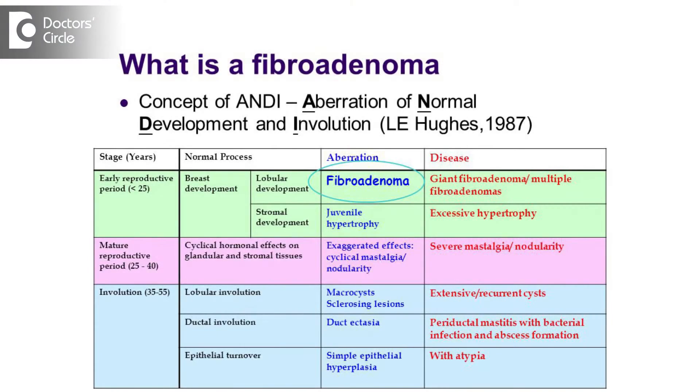Multiple fibroadenoma in the breast is a part of a disease called ANDI — A-N-D-I — Aberration in Normal Development and Involution, also called Fibrocystic Disease of the Breast.